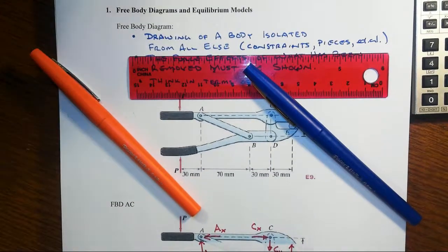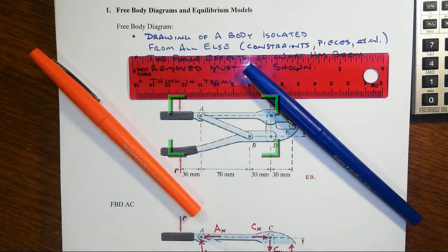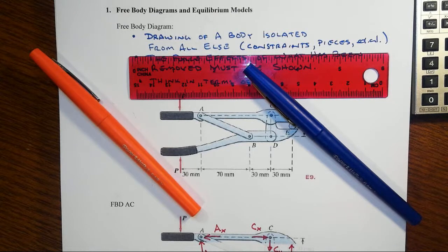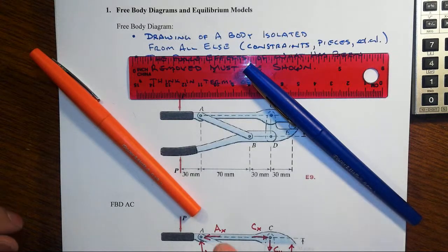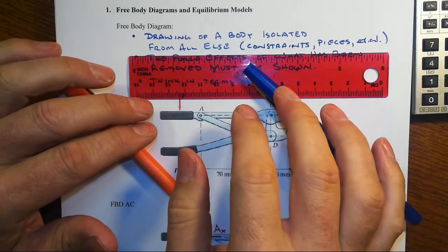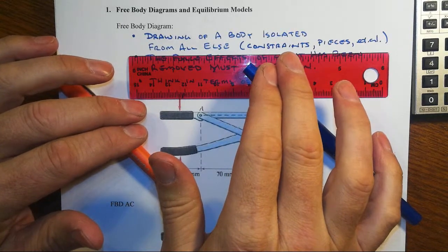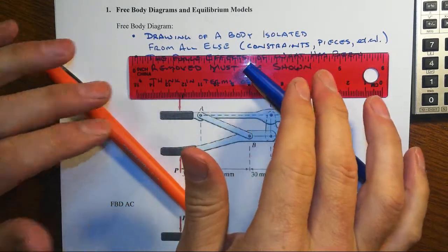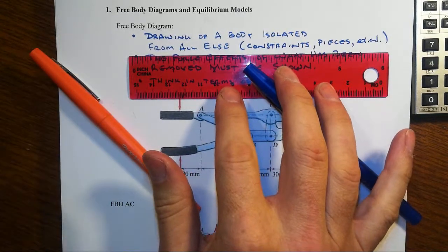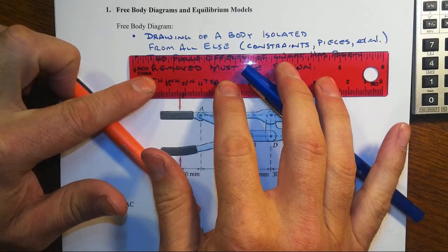All right, let's take some time to go back and really focus in on what free body diagrams and their associated equilibrium equations are really all about. Number one, a free body diagram is just a drawing that we have to have in order to do everything else in statics. And that drawing is of a body or a portion of a body that is isolated from everything else that it was connected to.